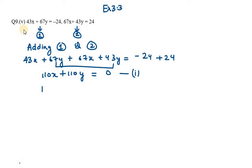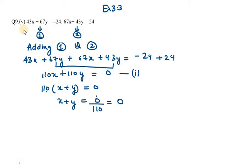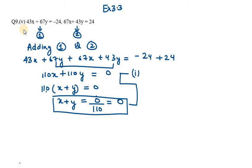This is equation number 1. Now I can simplify this further — you can take 110 common from the left hand side, so it will be 110 into (x plus y) equals 0. Bringing 110 to the right hand side gives x plus y equals 0 over 110, and 0 over any number is 0. So this is my final equation number 1.